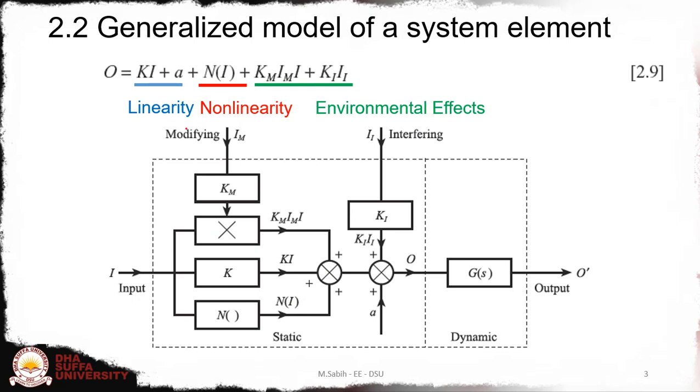Since this is a function of input, it's taking the input from here and it will become N(I). Then we have the modifying input from the environment and interfering input from the environment. The interfering input is multiplied with KI and is available as an additive term, while the modifying input will be multiplied with KM and then with the input I, so it will change the slope.